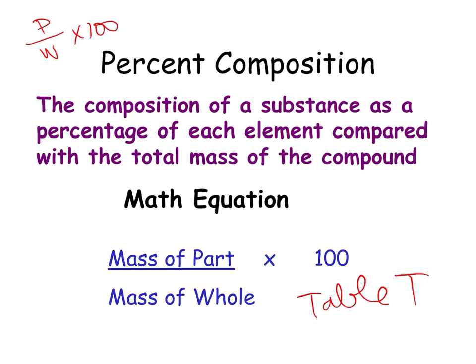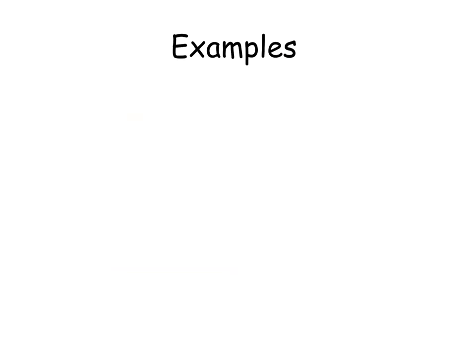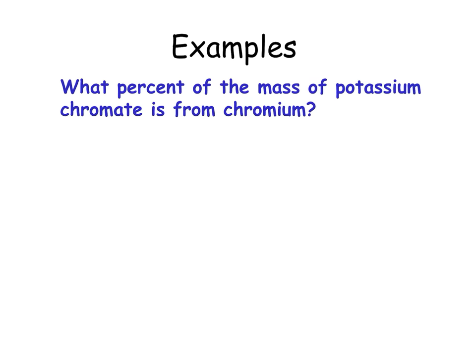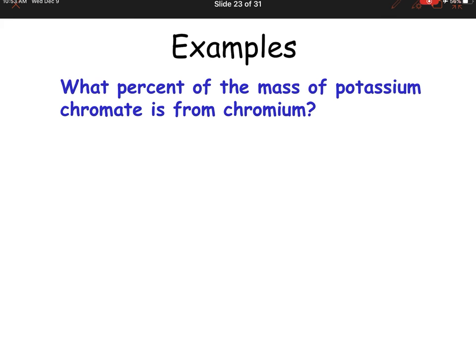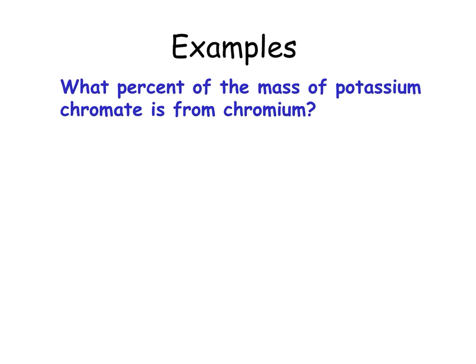You can also have a percent composition using lab data, where we wouldn't use percentage of each element in a compound. You just look for befores and afters. So there's that. So here is an example in which we are not given any lab data. We're given simple formulas.